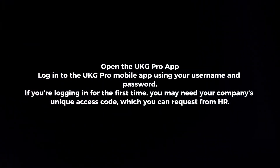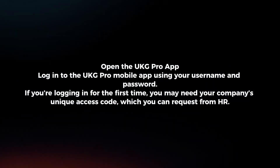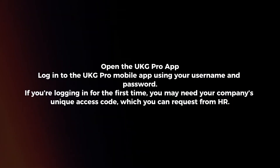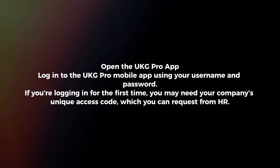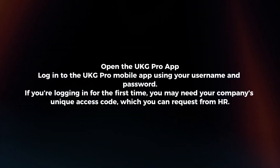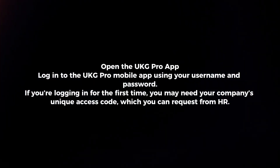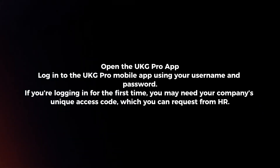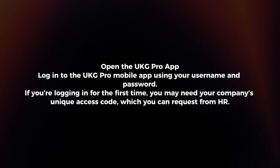Open the UKG Pro app. Log into the UKG Pro mobile app using your username and password. If you're logging in for the first time, you may need your company's unique access code, which you can request from HR.